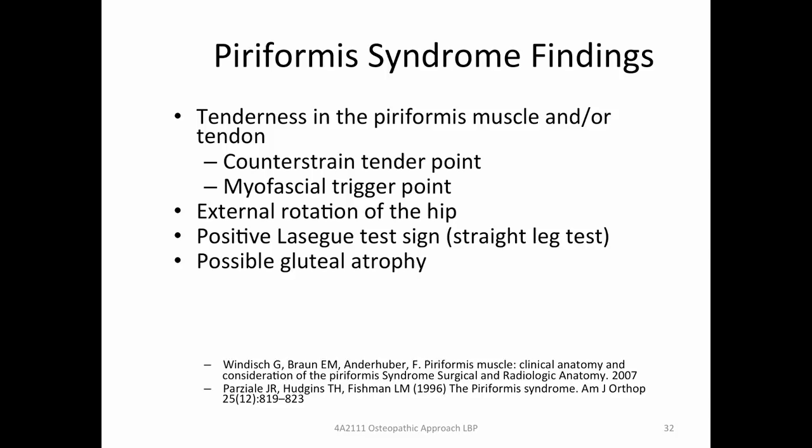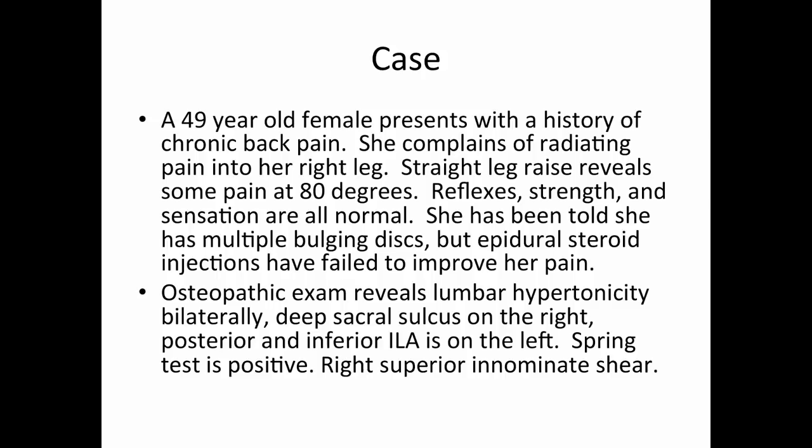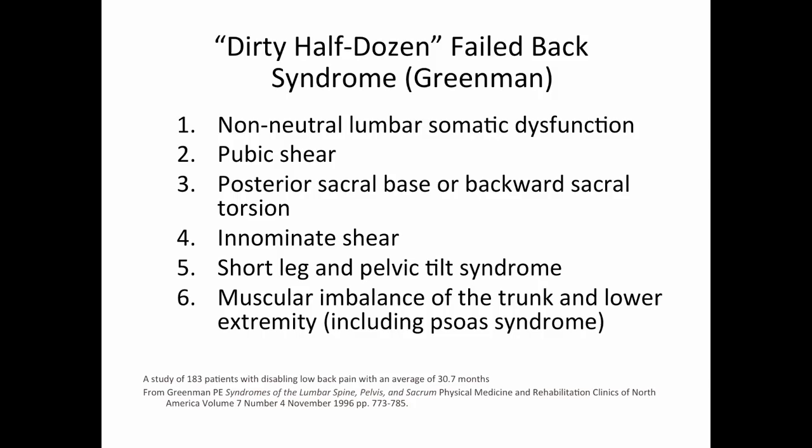Case: a 49-year-old female with chronic back pain radiating into her right leg. Straight leg raise causes pain at 80 degrees. Reflexes, strength, and sensation are all normal. She's been told she has multiple bulging discs, but epidural steroid injections have failed. Osteopathic exam reveals lumbar hypertonicity bilaterally, a deep sacral sulcus on the right, posterior and inferior ILA on the left, positive spring test, and the right innominate is sheared superiorly. The neurologic exam is relatively normal, and the straight leg raise at 80 degrees is outside the classic range for disc.